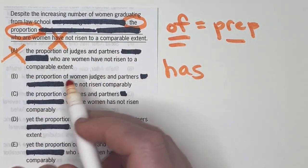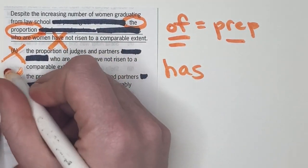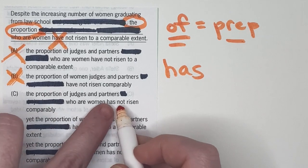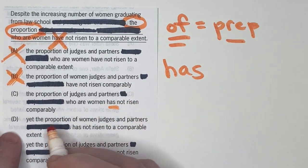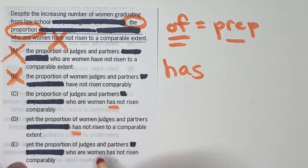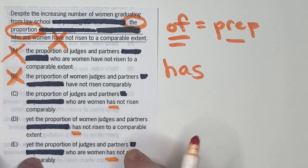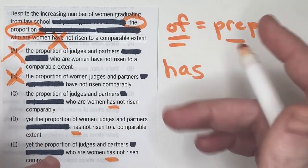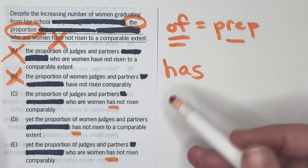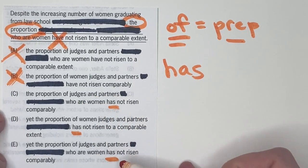So any answer choices that have this subject verb disagreement, we can cross off. So obviously, A is out since it's a repeat. The proportion have, B is out. C, the proportion has. That's okay. We can keep C. D has, we can keep it. E has, we can keep it. So great. So that's our main error. Well, now we have to see what else is there. What are the other differences between these?